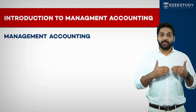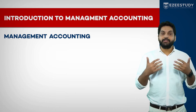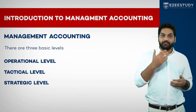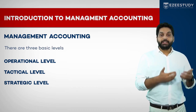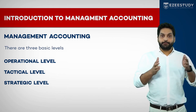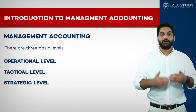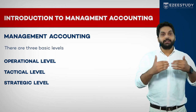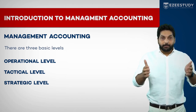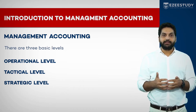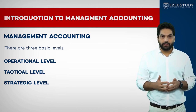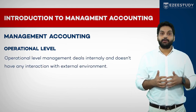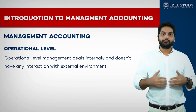To produce information effectively, we need to understand the organization's levels of management. There are three basic levels: operational level, tactical level, and strategic level. The operational level is the local or routine level of management. It requires structured information, because tasks at this level are pre-defined. This level covers a specific area of the organization and primarily requires internal information, as operational management deals mainly with the internal environment.